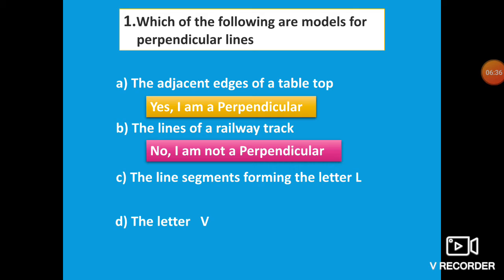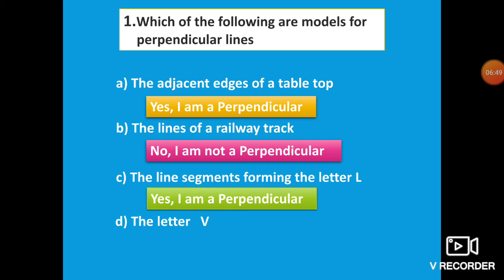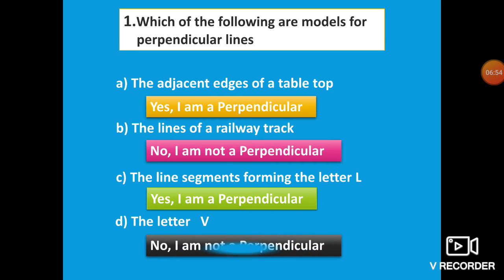Third: the line segments forming capital letter L. Capital letter L is a best example of perpendicular lines — we can see a right angle there, so yes, it is perpendicular. Fourth: the letter V. Is letter V a perpendicular? No, it is not perpendicular — it does not form a right angle.